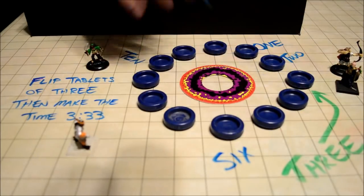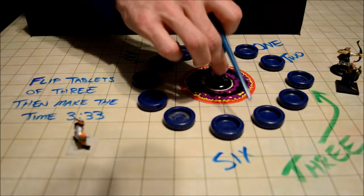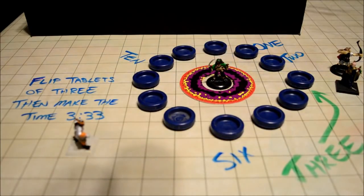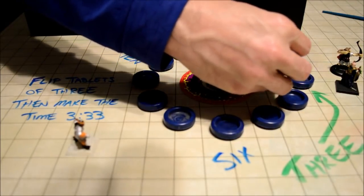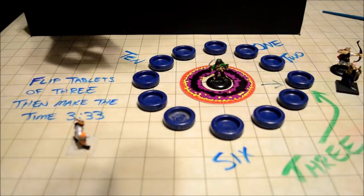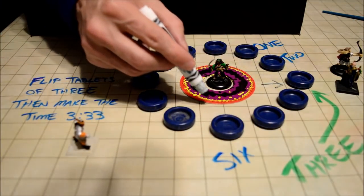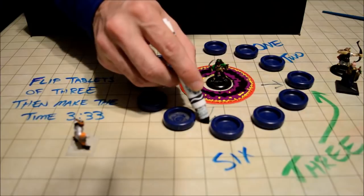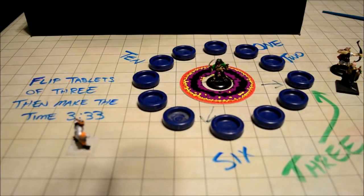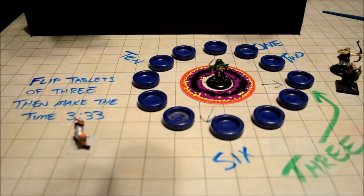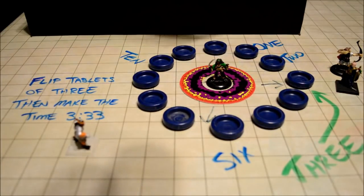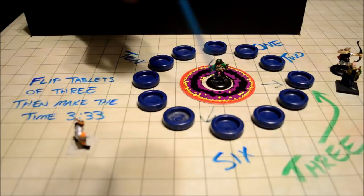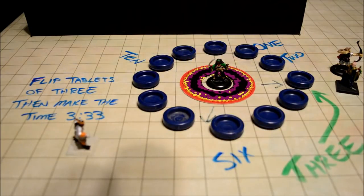After the tablets are set up, one of the characters needs to come stand on the pedestal in the middle. They take their left arm and face it toward the number three, and then point their other arm in the direction of the 33 position. The sunlight will come through, light it up, and they'll be able to see the clock hands pointed toward three and thirty-three — and your players have solved the puzzle.